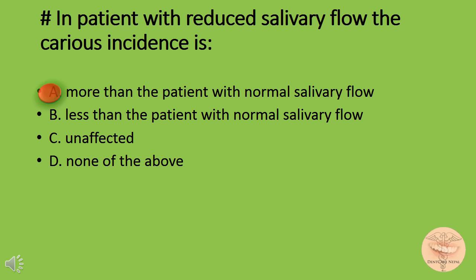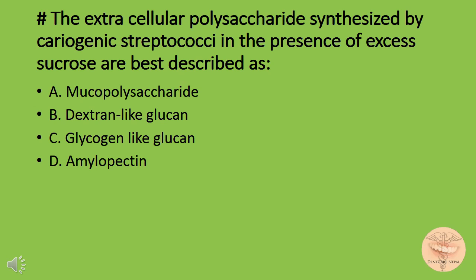In conditions where salivary flow is reduced, there is more predisposition to develop dental caries. The extracellular polysaccharides synthesized by cariogenic streptococci in the presence of excess sucrose are best described as: option A) mucopolysaccharide, option B) dextran-like glucan, option C) glycogen-like glucan, or option D) amylopectin. The correct answer is option B: dextran-like glucan.